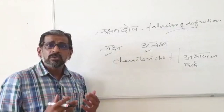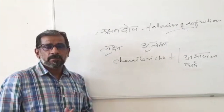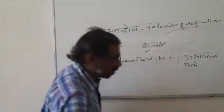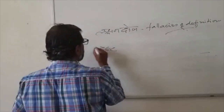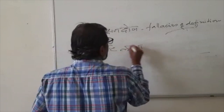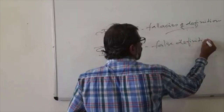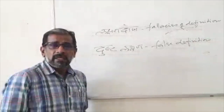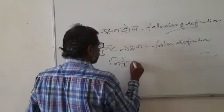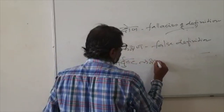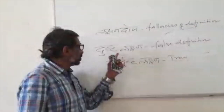At some times, a stated definition may not be true. Such a definition is called Dushta Lakshana — a false definition. On the other hand, a definition which is true is called Nirdushta Lakshana — a true definition.